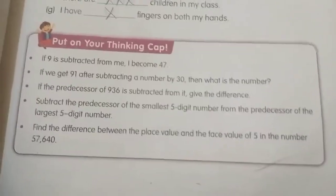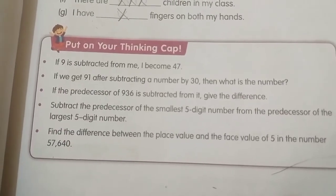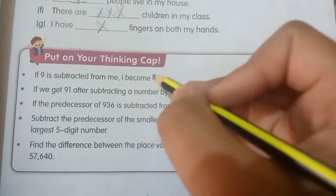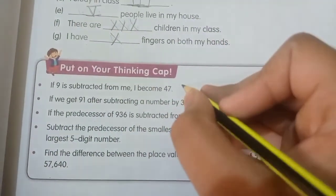Okay friends, now I will tell you to put on your thinking cap. If 9 is subtracted from me, I become 47. So we add 9 plus 47, how much is it? That is 56.